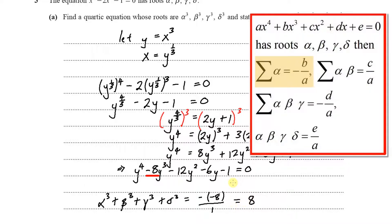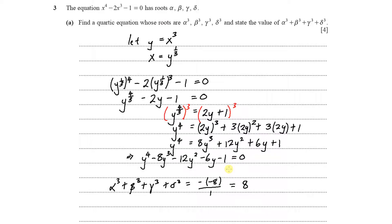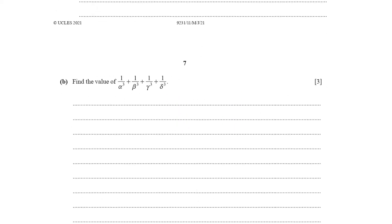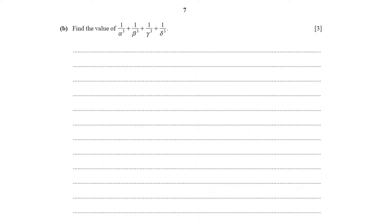Part (b): find the value of 1 over alpha cubed plus 1 over beta cubed plus 1 over gamma cubed plus 1 over delta cubed. To evaluate this, we express it as a single fraction with common denominator alpha cubed beta cubed gamma cubed delta cubed.